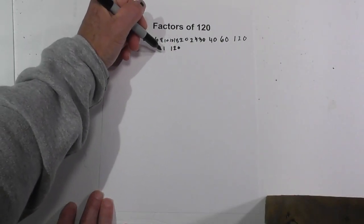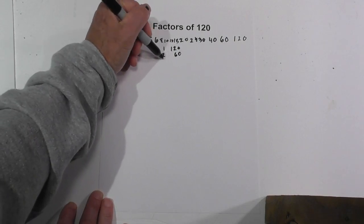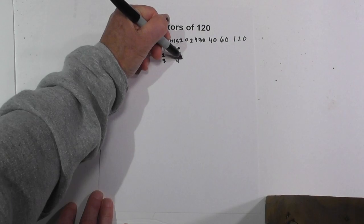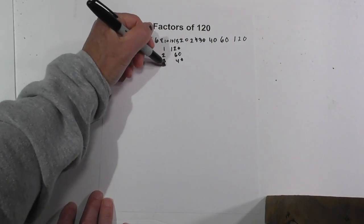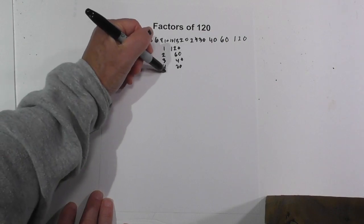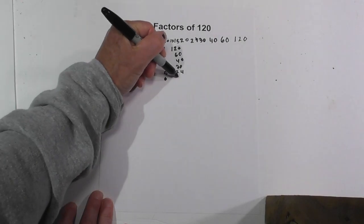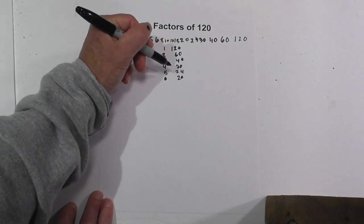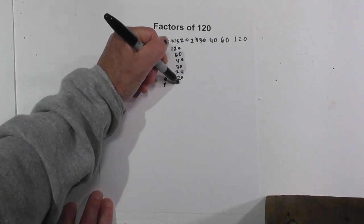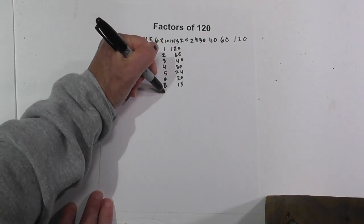1 times 120, 2 times 60, 3 times 40, 4 times 30, then we have 5 times 24, 6 times 20, 8 times 15, and then 10 times 12.